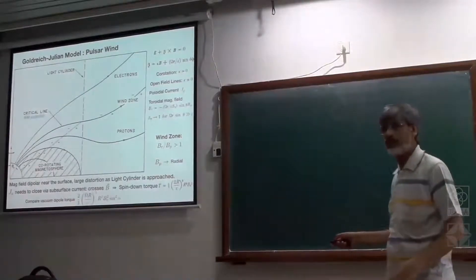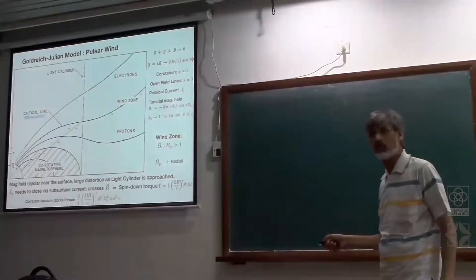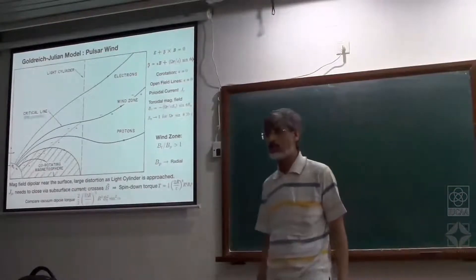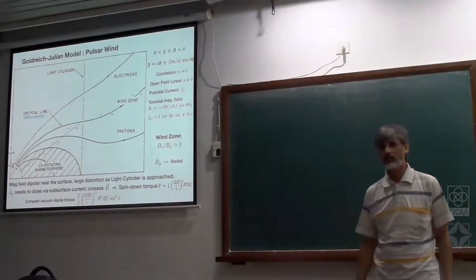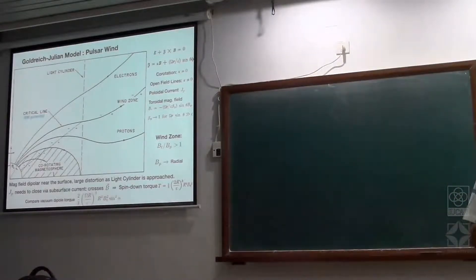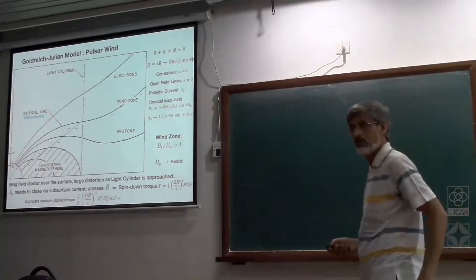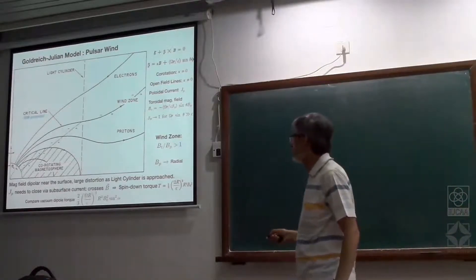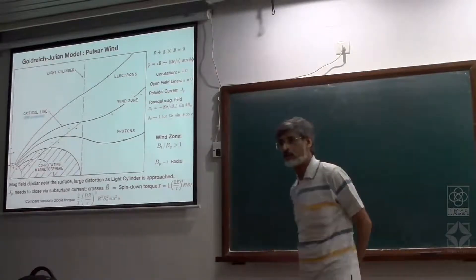Inside the surface, because charges are free to move, current will restore balance to the charge distribution which initially had equilibrium. So when you lose charge, that is balanced by a current across the field lines.